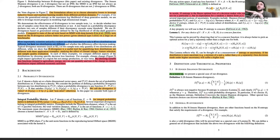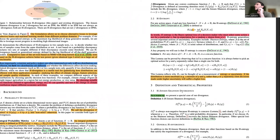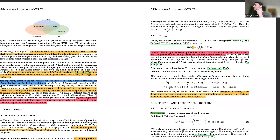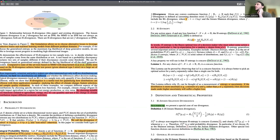The first property of a divergence is that it takes two probability distributions and outputs a non-negative real number. The other property is that if you have two distributions that are not equal to each other, their divergence should be greater than or equal to zero; and if they are the same, that should equal zero. Then they talk about strict divergence versus non-strict, where strict divergence means if two probability distributions don't equal each other, their divergence should be strictly greater than zero.